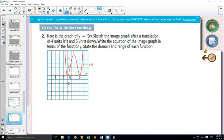What you can do is take some key points. Those look like important points. You can move them 4 to the left and then 5 down.